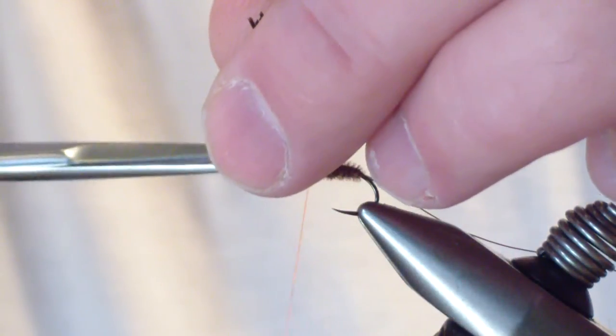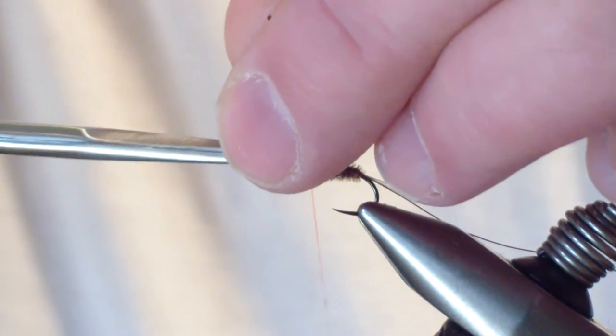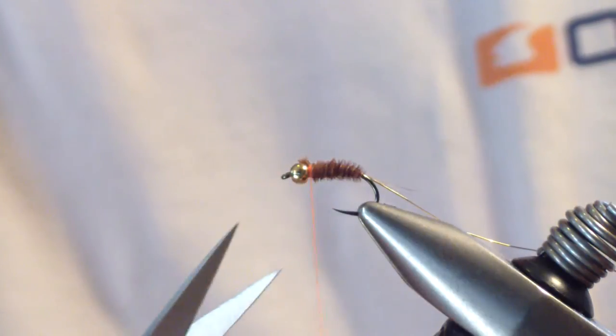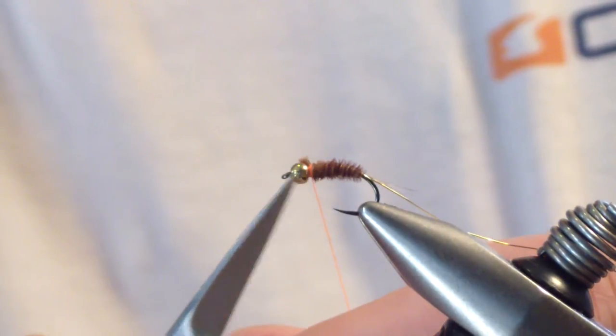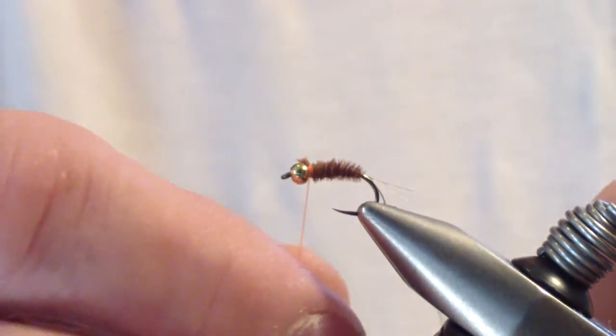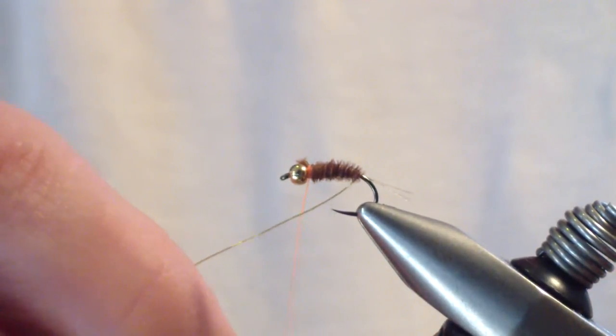This actually was the first pattern that I began tying using these tactical hooks. Frenchie's always been a very positive add to my box throughout Pennsylvania. But I tried these hooks. These tactical hooks with this pattern. And they have stuck. They've since then become a solid performer for a number of nymphs.